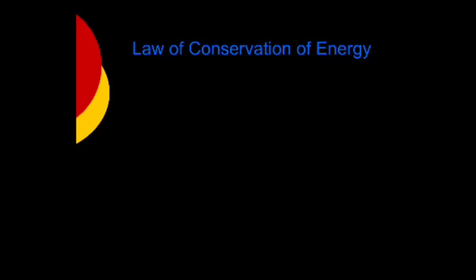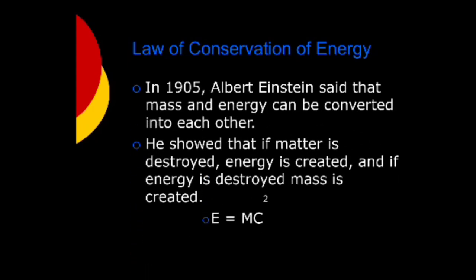In 1905, Albert Einstein said that mass and energy can be converted into each other. He showed that if matter is destroyed, energy is created. And if energy is destroyed, mass is created. Hence, E equals MC squared.